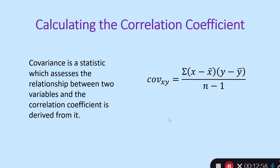The formula for covariance — step one — should look familiar; it is the formula for variance, changed slightly because there are now two variables. For variance, we summed each score minus the mean, squared it, summed them all together, and divided by degrees of freedom. For covariance, rather than squaring — rather than (x minus x-mean) times (x minus x-mean) — we have (x minus x-mean) times (y minus y-mean). Those products are summed and we divide by the degrees of freedom.